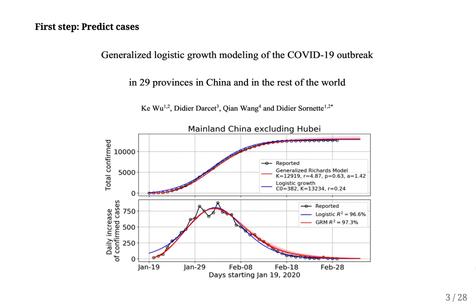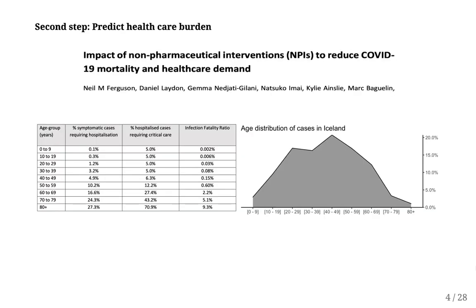This model gives us predictions for diagnosed cases, which is not the same as healthcare burden or hospital admissions. I am sure that most of you are familiar with this paper from Imperial College on the impact of non-pharmaceutical interventions to reduce COVID-19 mortality and healthcare demand based on data from Wuhan. Of special interest to us was Table 1 in this paper,